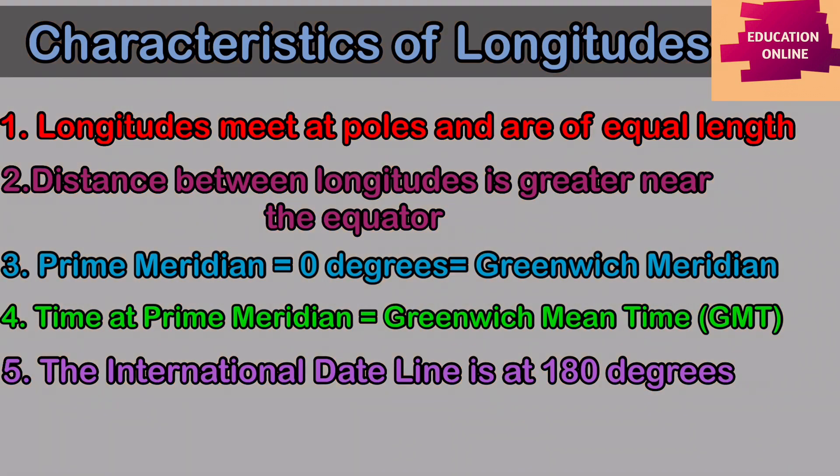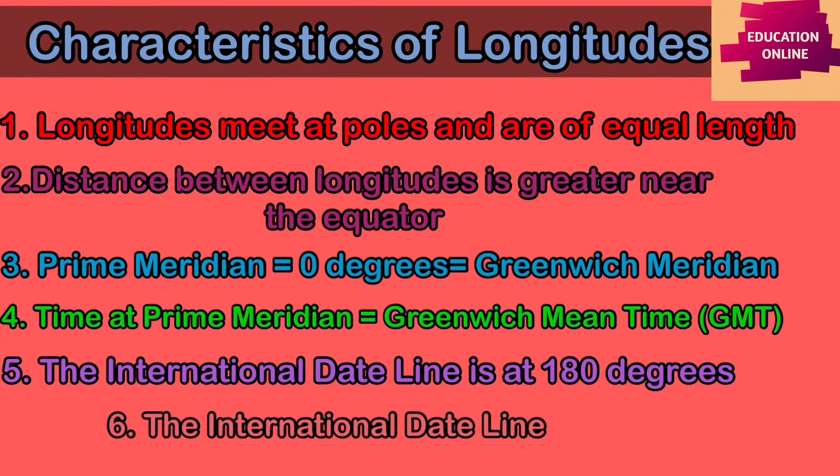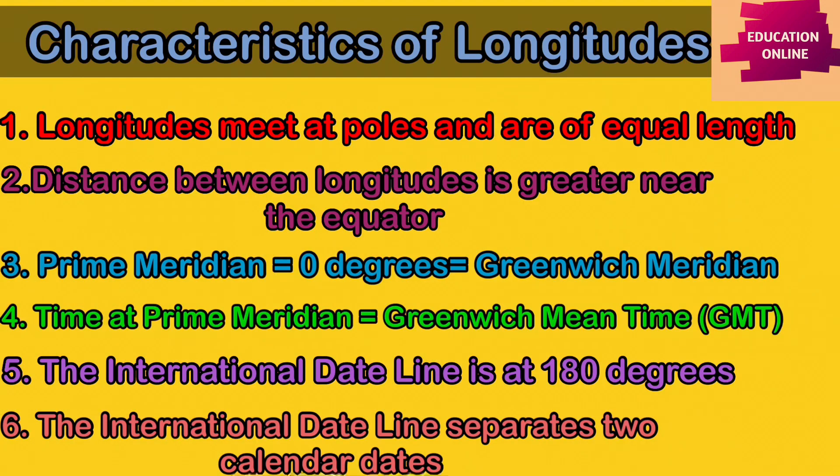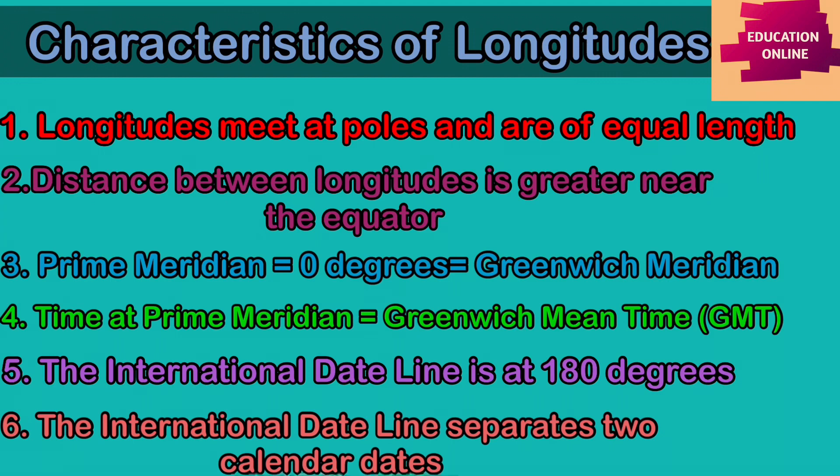The Prime Meridian along with the International Date Line together divide the earth into two equal halves: the eastern hemisphere and the western hemisphere. The International Date Line separates two calendar dates. Regions lying in the eastern hemisphere are one day ahead of the places situated in the western hemisphere.